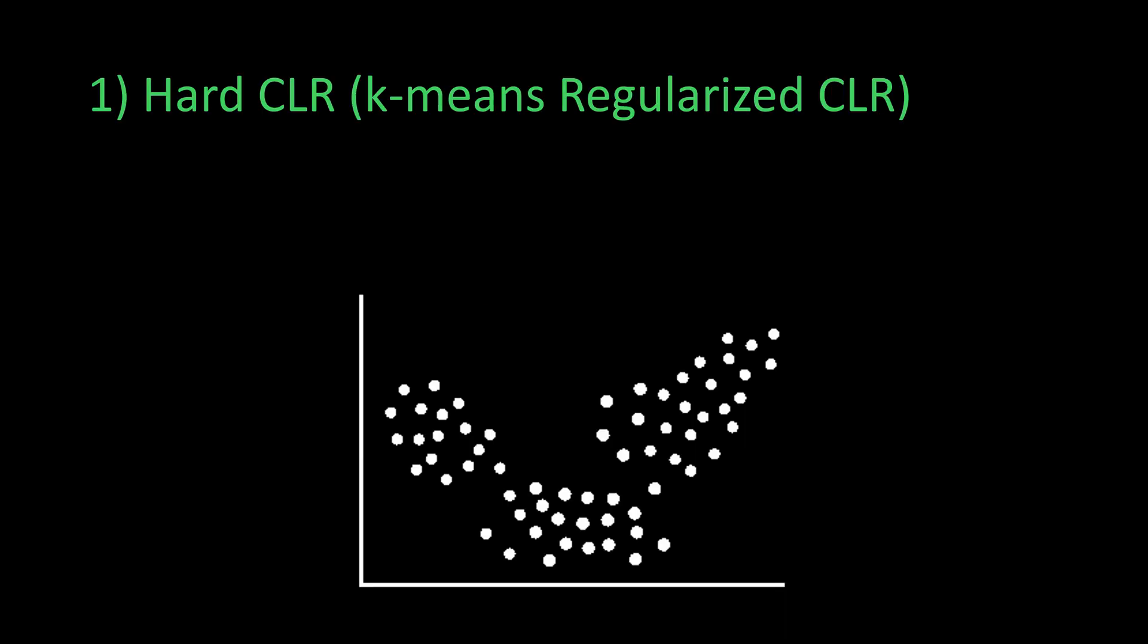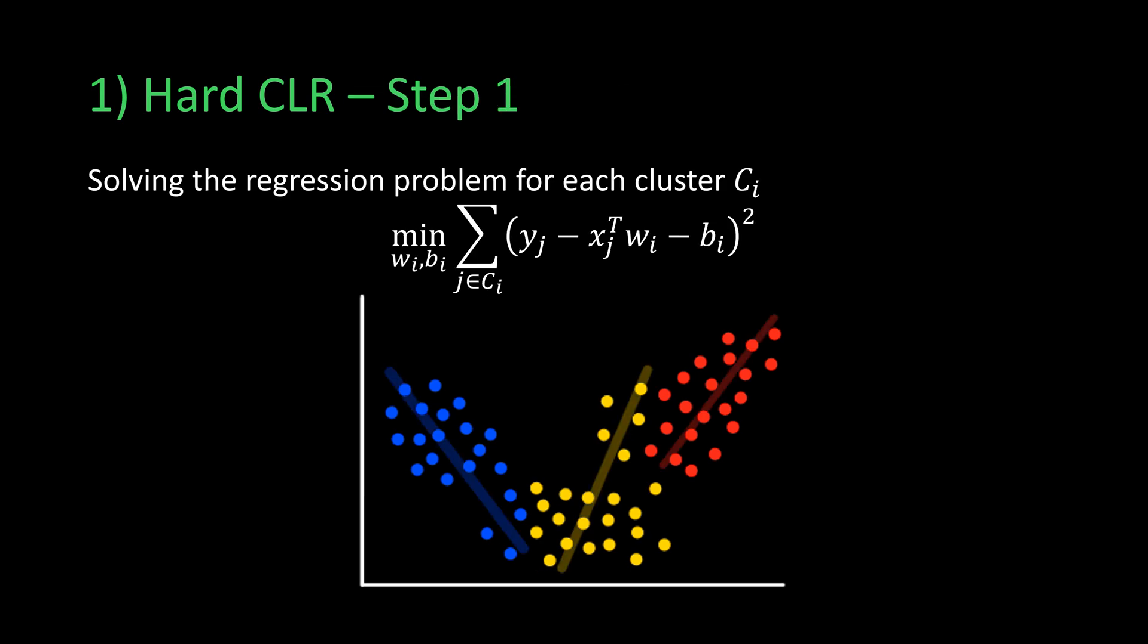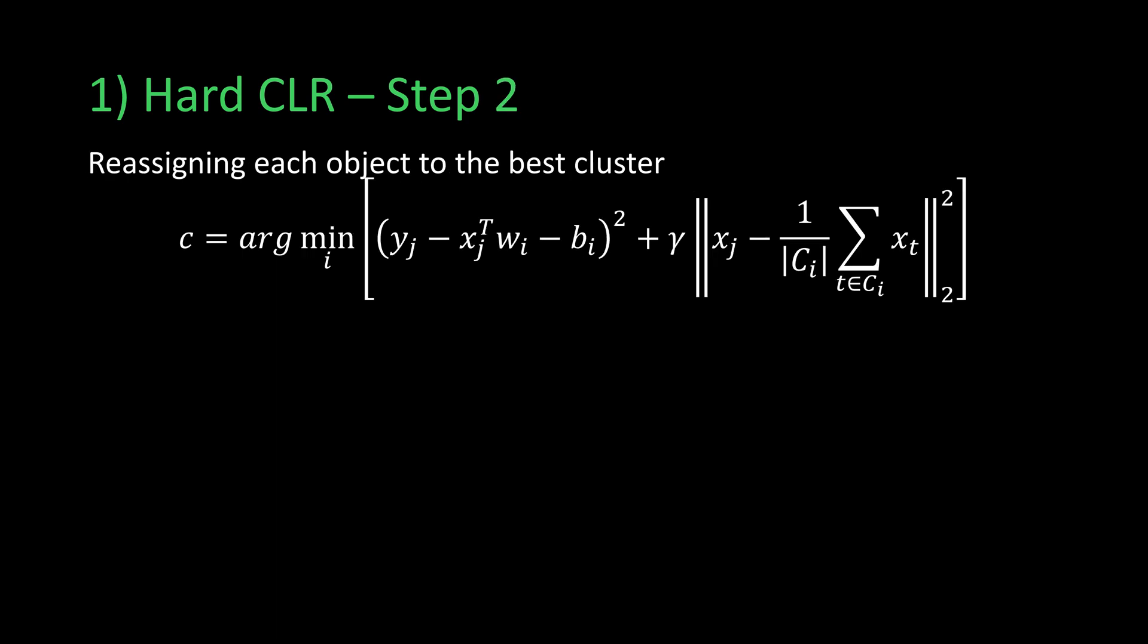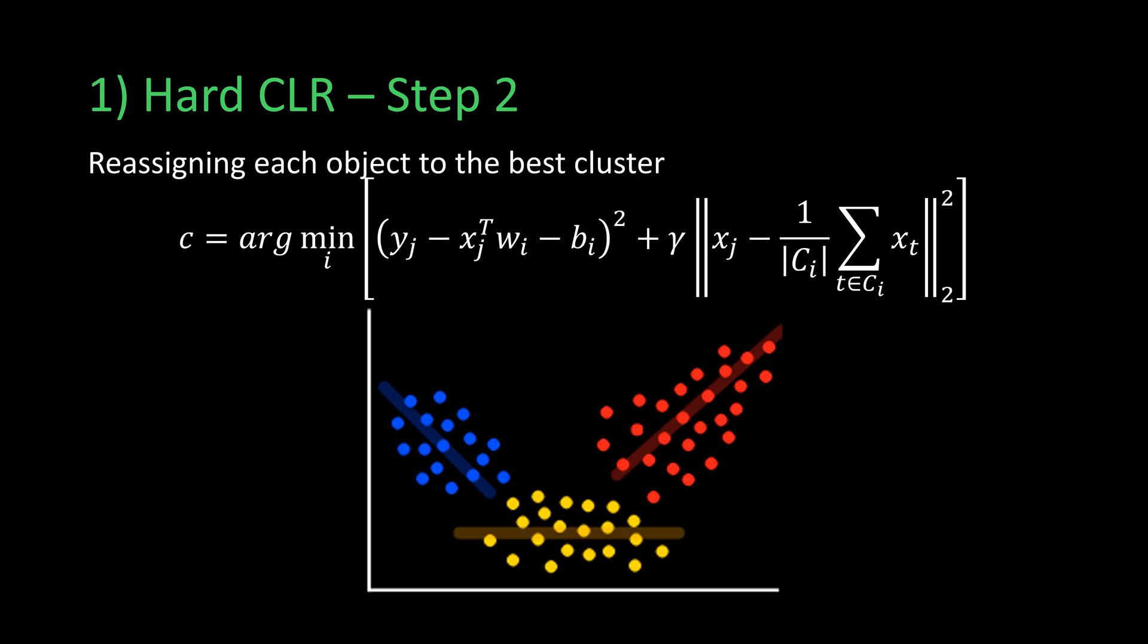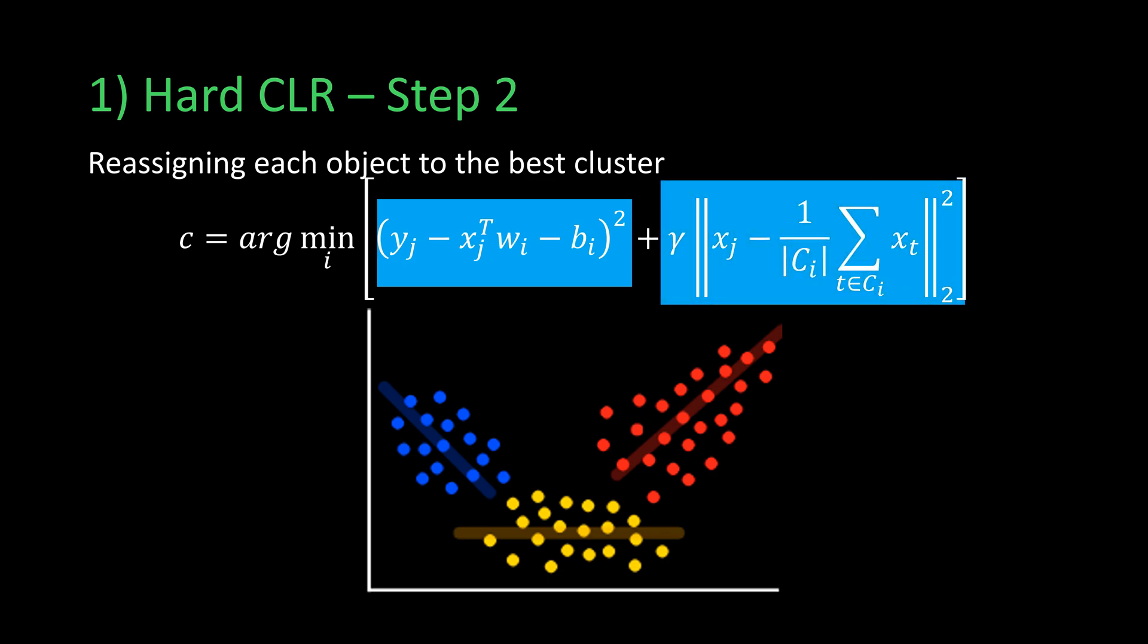The first approach presented in this paper is the hard CLR, or the k-means regularized CLR. In the initialization step, the data points are associated with random cluster labels. For the first step, the linear regression problem is solved for every cluster CI. In the second step, each data point is reassigned to the best cluster such that the following objective function is minimized. The first term is the linear regression squared error loss, while the second term denotes the regularized k-mean clustering loss. Inspecting the objective function, if gamma tends to 0, this yields the squared error of the linear regression.